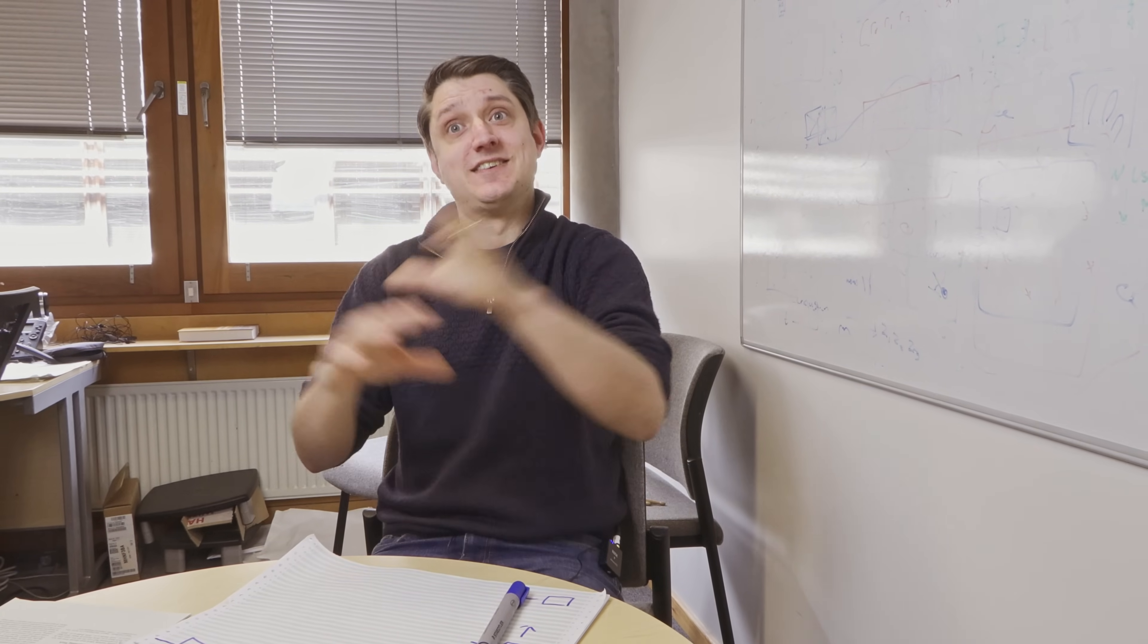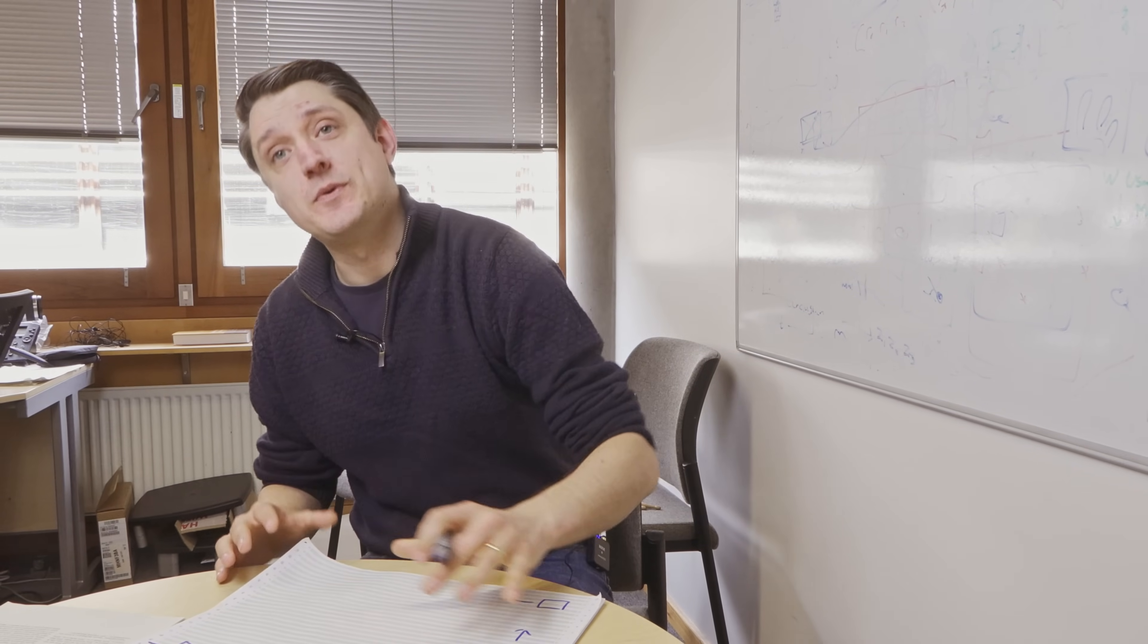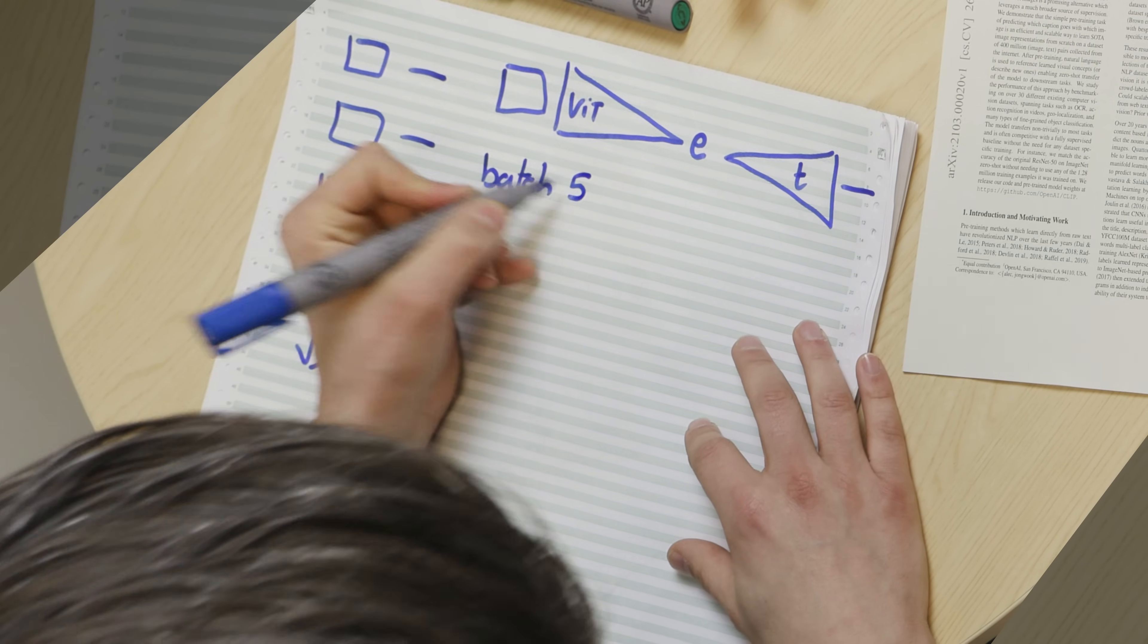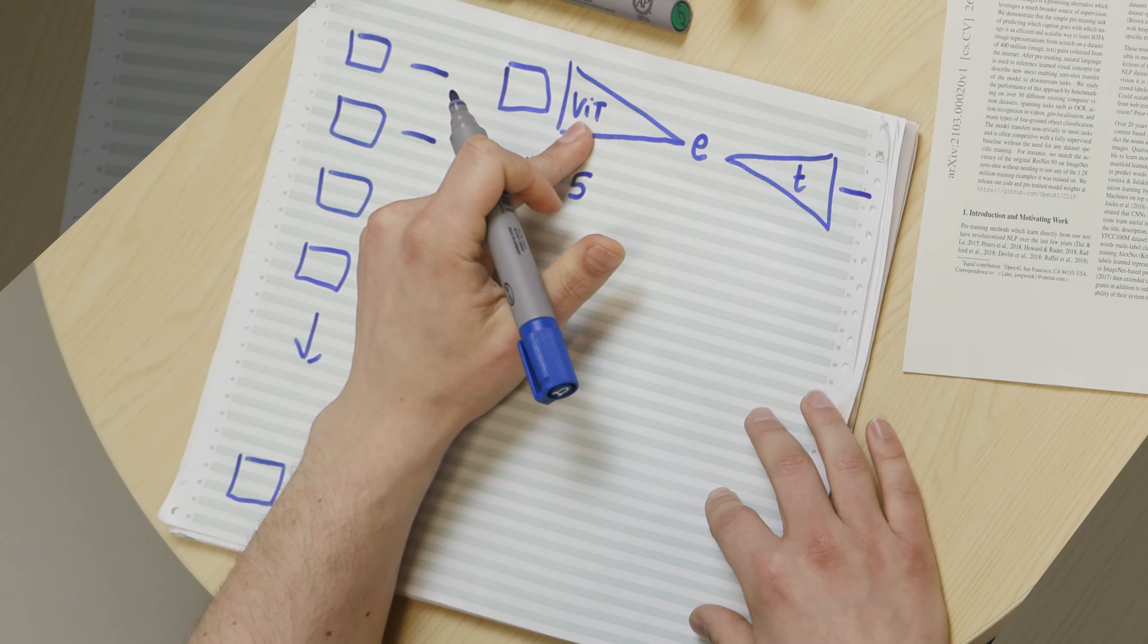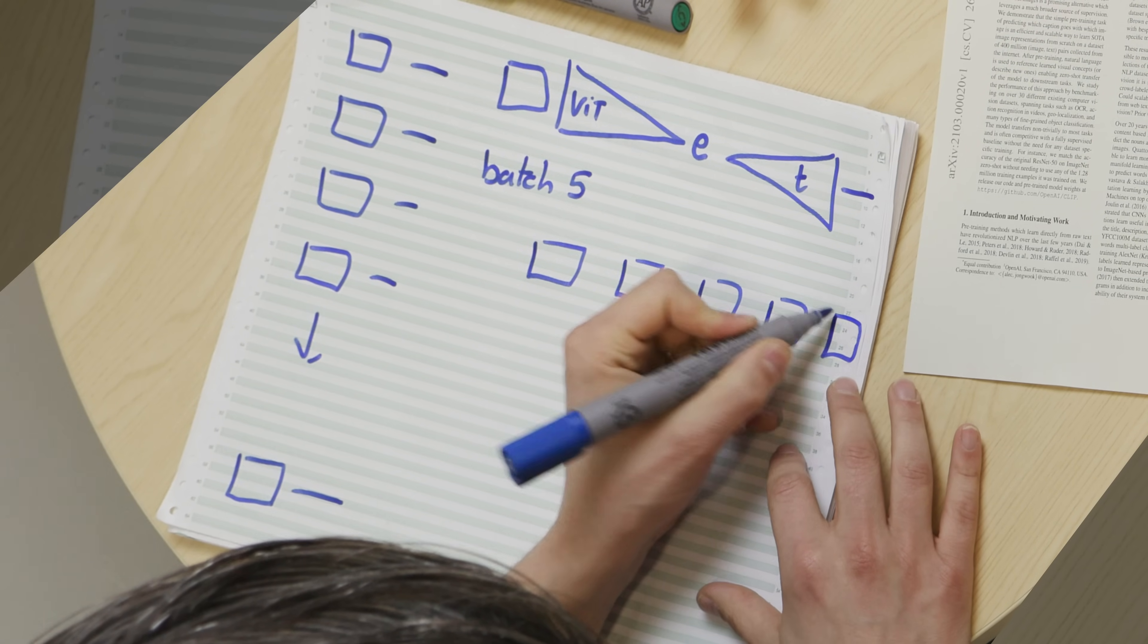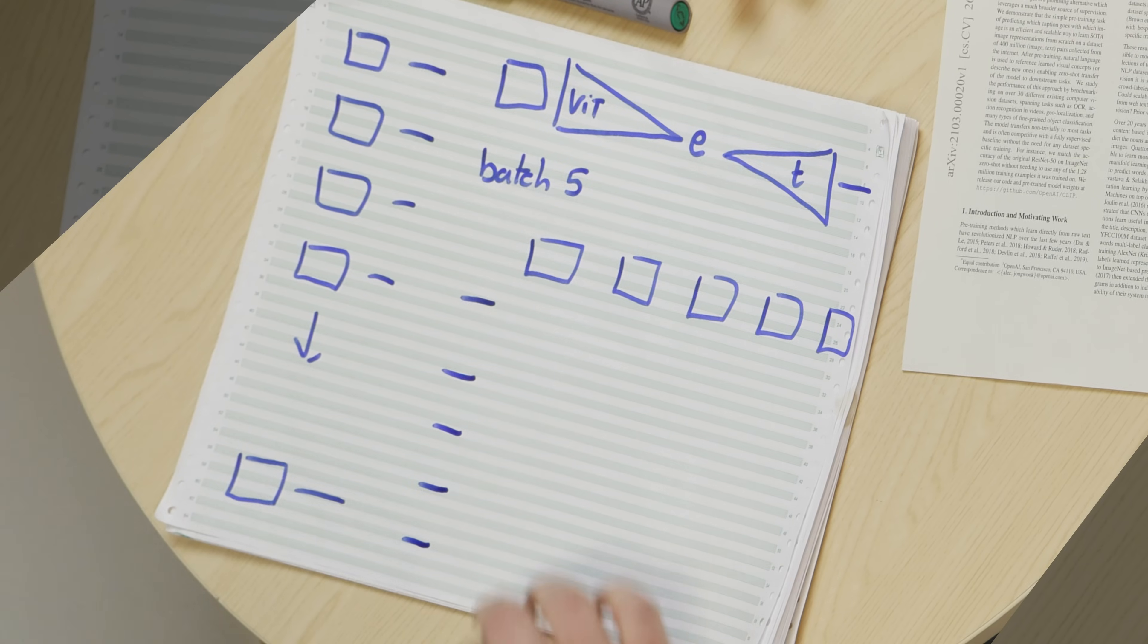And what we're going to try and do is, across this entire data set, train it so that these embed to the same place when they're a pair. And when they're not a pair, they embed to different places. Because there are different things in the image. So how do we train this? Well, what we do is we take a batch of images. Let's say five images. So let's say our batch or our mini batch is five. So we're going to have five images with five bits of text that go with those images. And we're going to put them through our vision transformer and through our text encoder. So we're going to get image, image, image, image, image. Nearly off the page. We made it. Text, text, text, text, text.